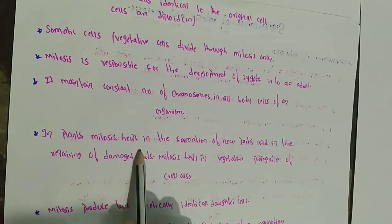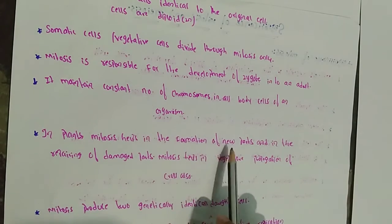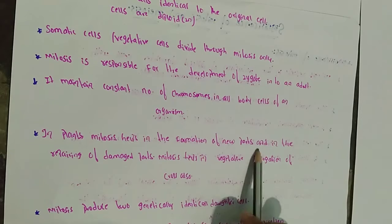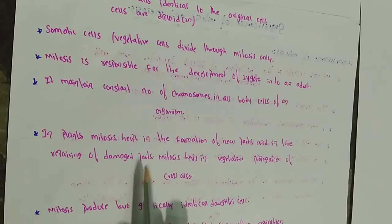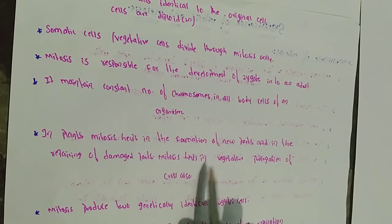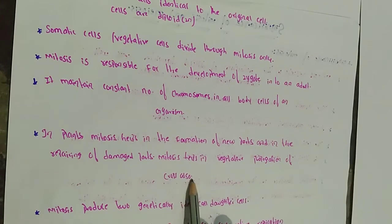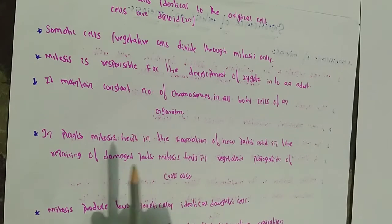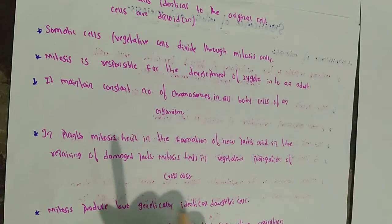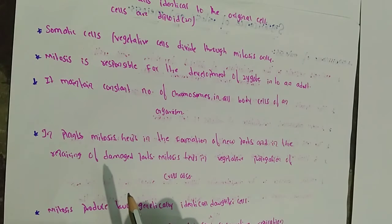In plants, mitosis helps in the formation of new parts and in the repairing of damaged parts. Mitosis also helps in the vegetative propagation of crops.